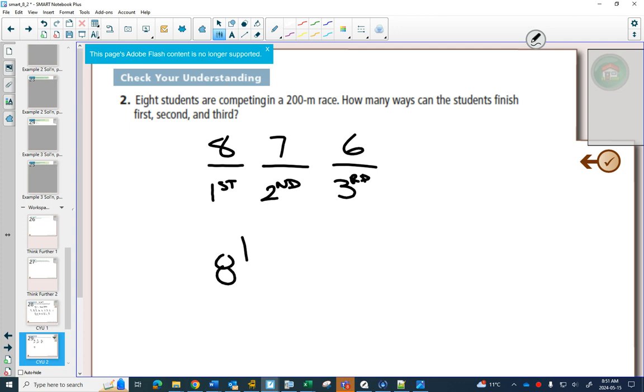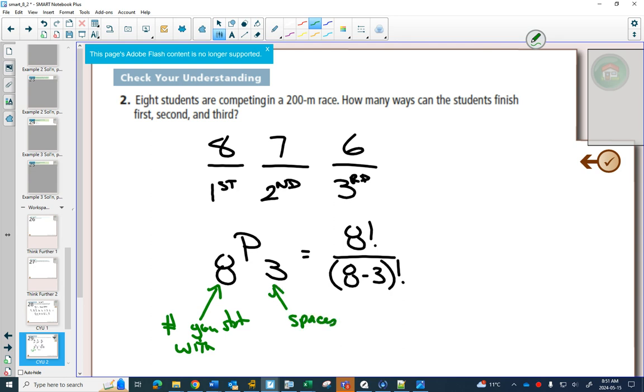And this is the same as you have eight total choices. You need the permutations when you take three of them at a time. And according to the formula, this is 8 factorial over 8 minus 3 factorial. That's what the formula says. So R is just 3. So we're going to basically, the 8 is the number you start with. And the 3 is your spaces or your decisions, right?